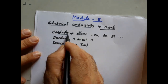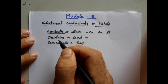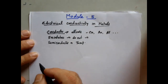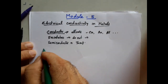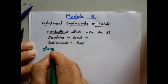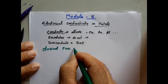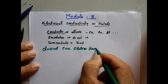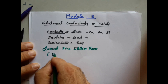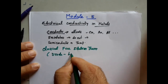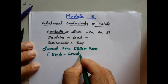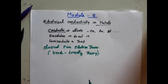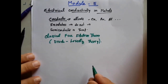Today we need to understand how conductivity takes place in the case of a conductor. There are two approaches. One is a classical approach, what we call the classical free electron theory. This theory was explained by two scientists: Drude and Lorentz together, and this is what we call the Drude-Lorentz theory.